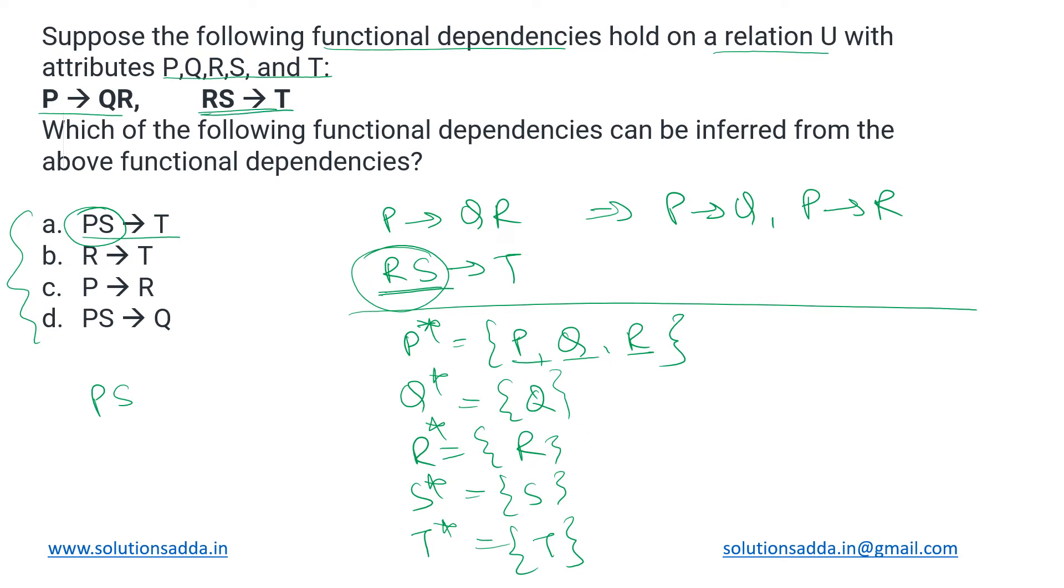While R and S together can derive T, so we can say that P will derive R first, and then R and S together will derive T. So in effect, this combines to give us PS deriving T. So the first FD can be inferred from the given two.